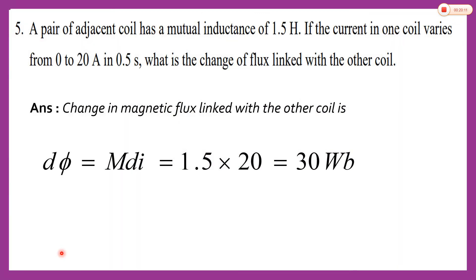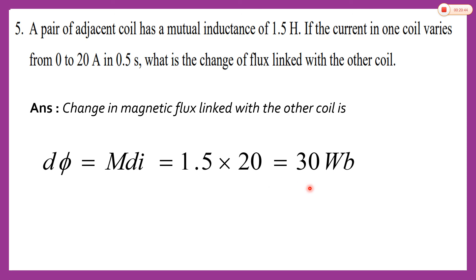The next question is a problem: a pair of adjacent coils has a mutual inductance of 1.5 henry. If the current in one coil varies from 0 to 20 ampere in 0.5 second, what is the change of flux linked with the other coil? Using dϕ = M × dI, with M = 1.5 and dI = 20, the answer is 30 weber.